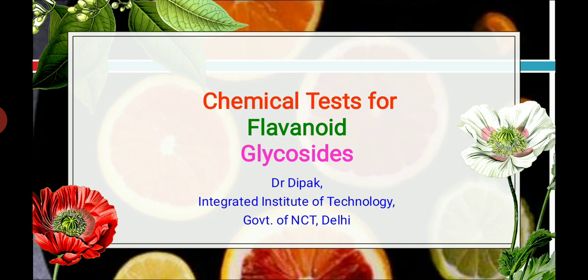Nature is so colorful and beautiful. The different fruits and plants that contain flavonoids are having different colors. Similarly, the flavonoids are also recommended in different kinds of diseases and disorders because of their immensely dynamic properties.